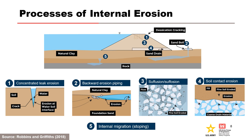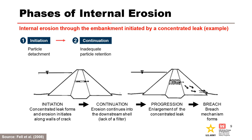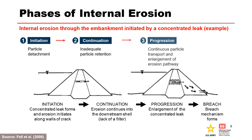The hydraulic gradient influences the likelihood of initiation and in some cases progression of each of the five internal erosion processes. The process of internal erosion has been generally broken into four phases in the best practices manual and ICOLD Bulletin 164. Initiation involves detachment of soil particles. Continuation involves inadequate particle retention based on filtering considerations. Progression involves continuous particle transport and enlargement of the erosion pathway. Failure or breach is characterized by the sudden, rapid, and uncontrolled release of impounded water or liquid-borne solids.